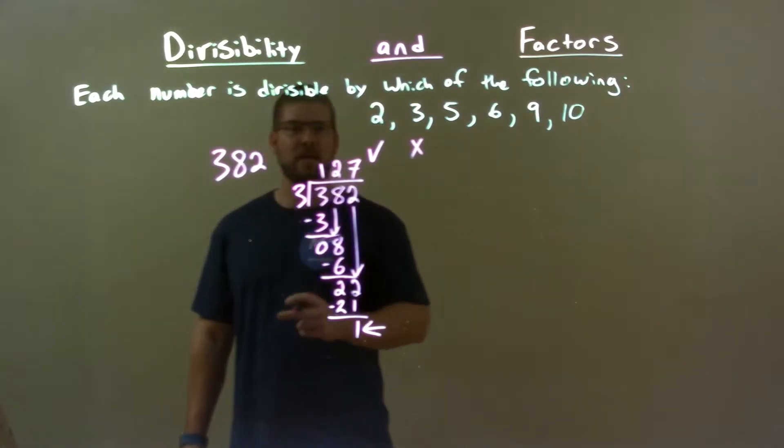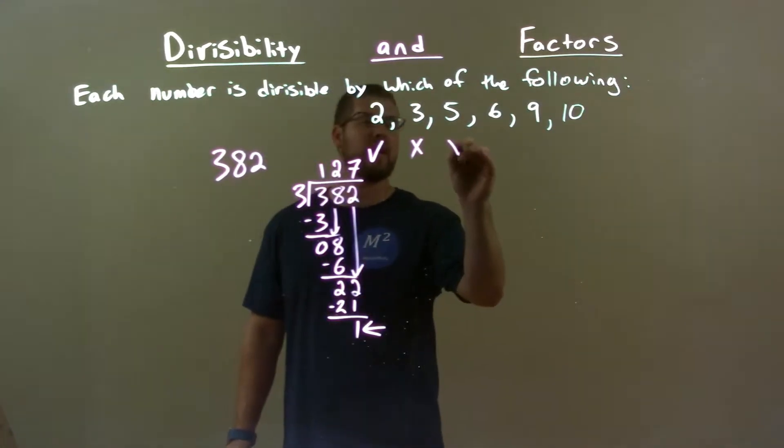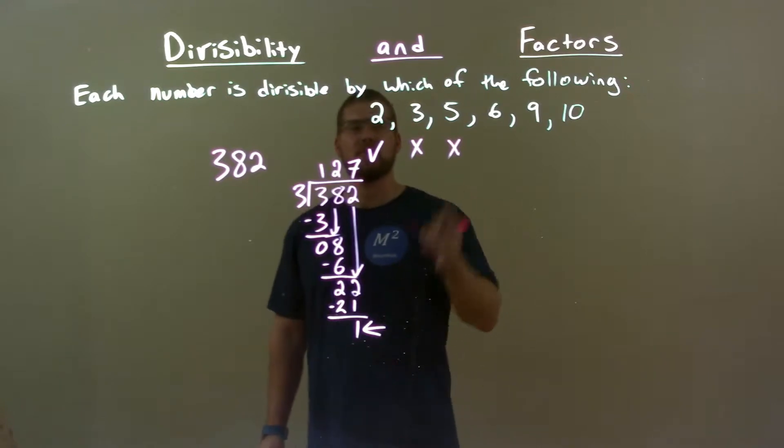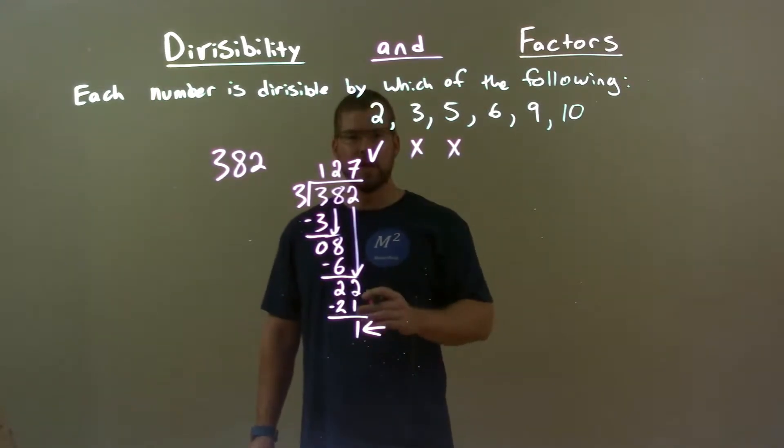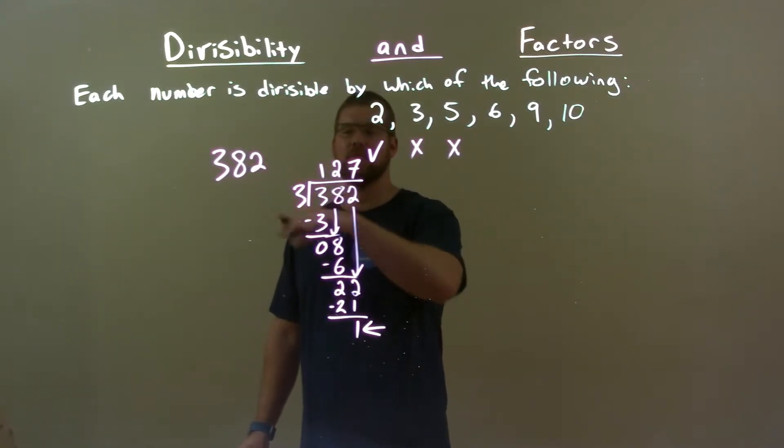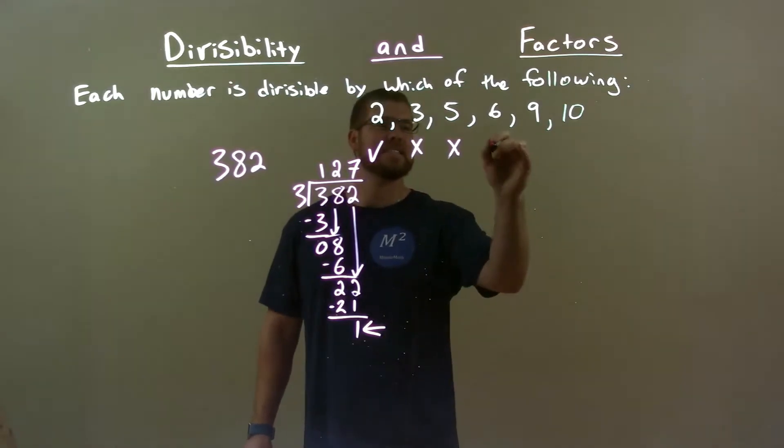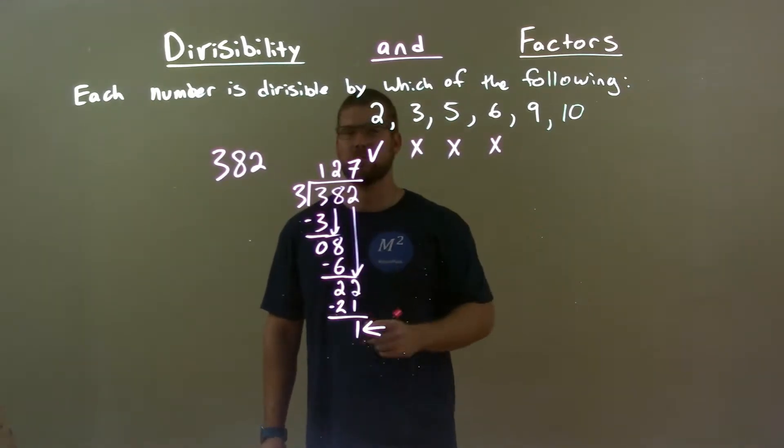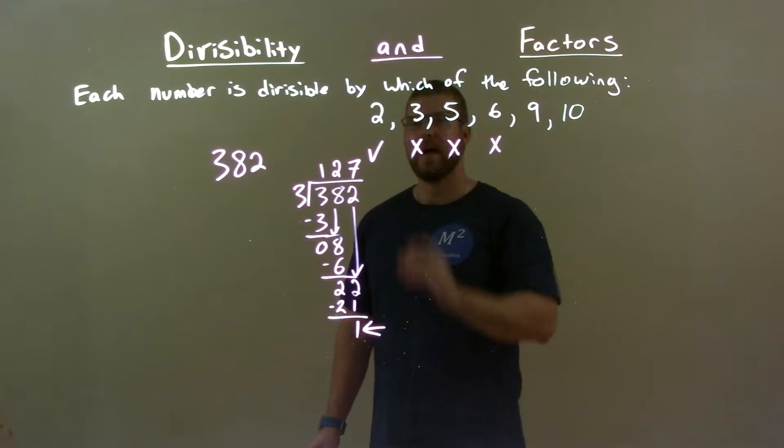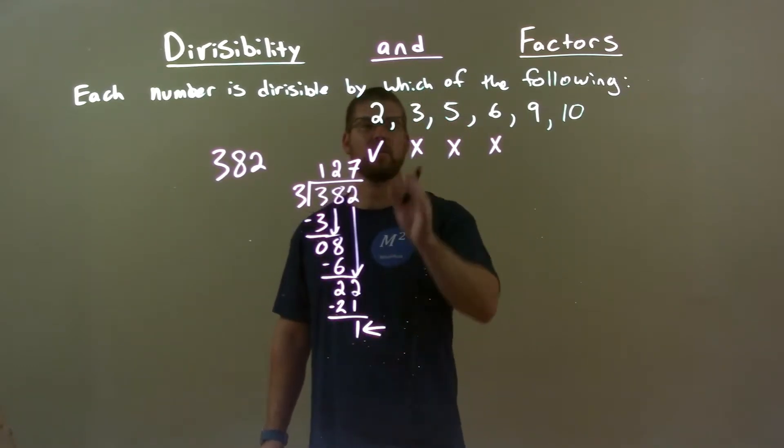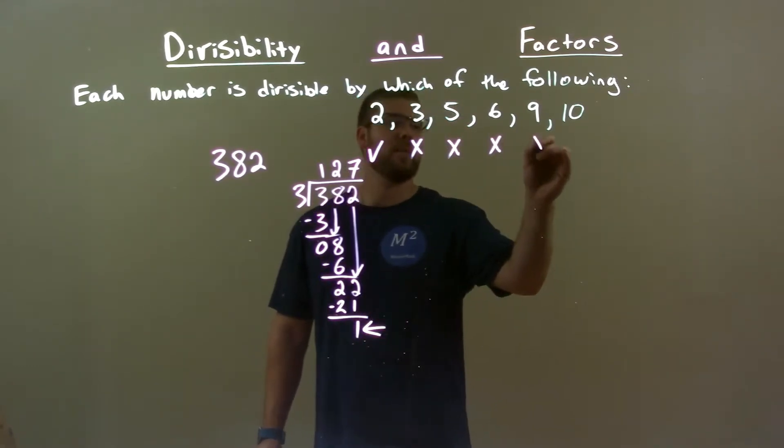5. The number doesn't end in a 0 or a 5, so 5 is out. Since 6 requires 2 and 3 to both be divisible, 6 is out because both of those don't happen. 9 has to have 3 as well. Since 3 does not happen, 9 won't happen.